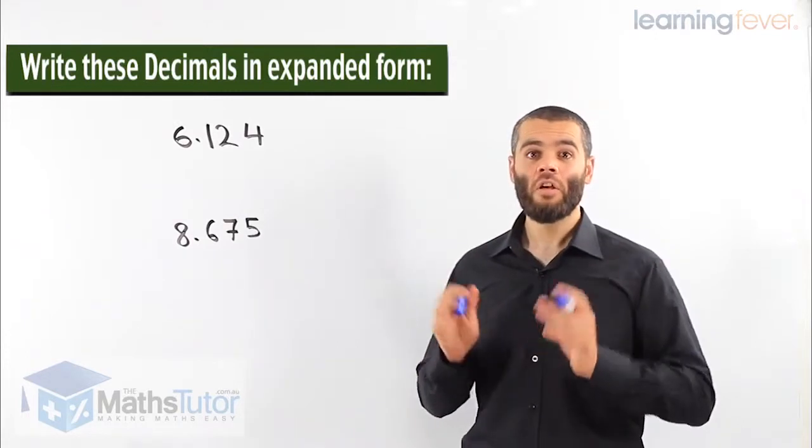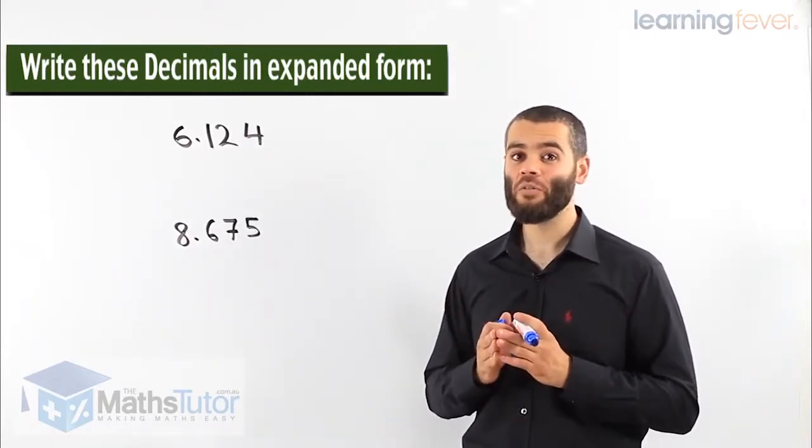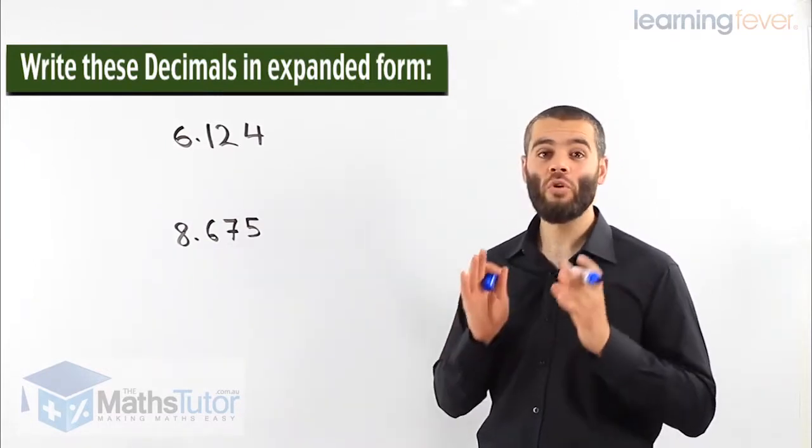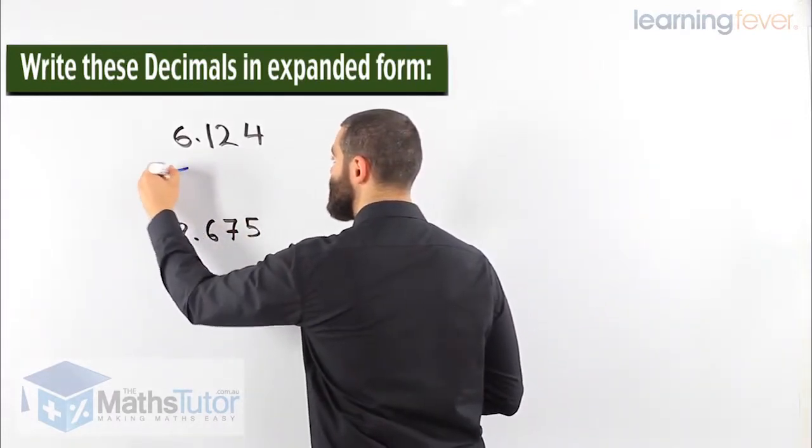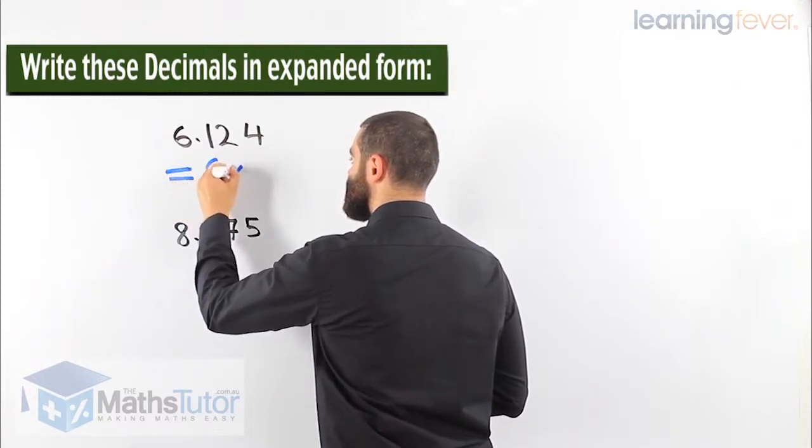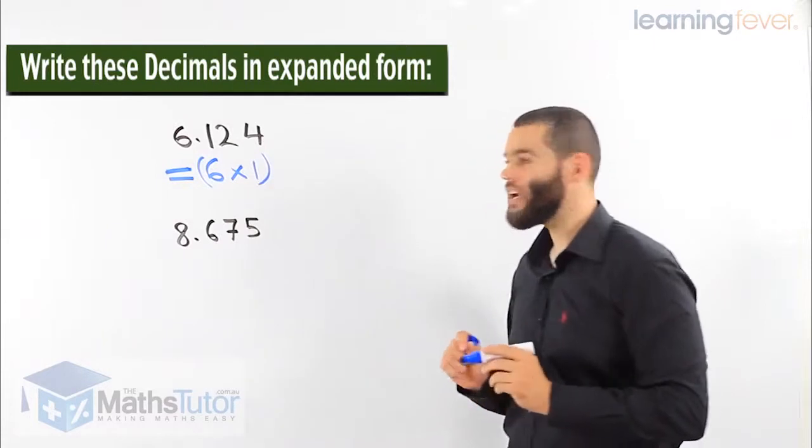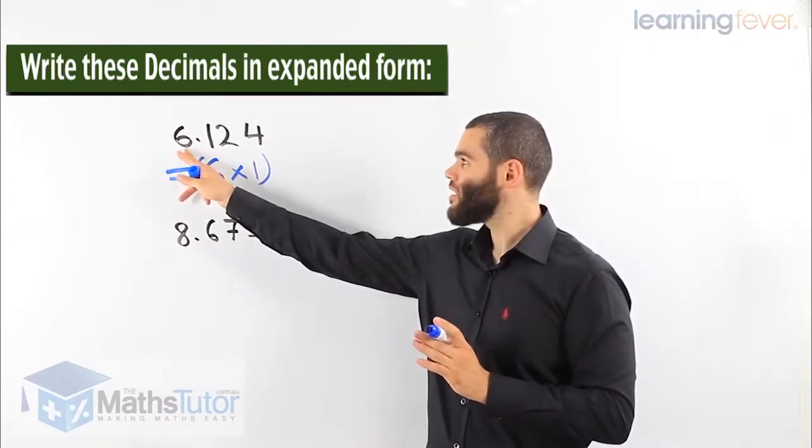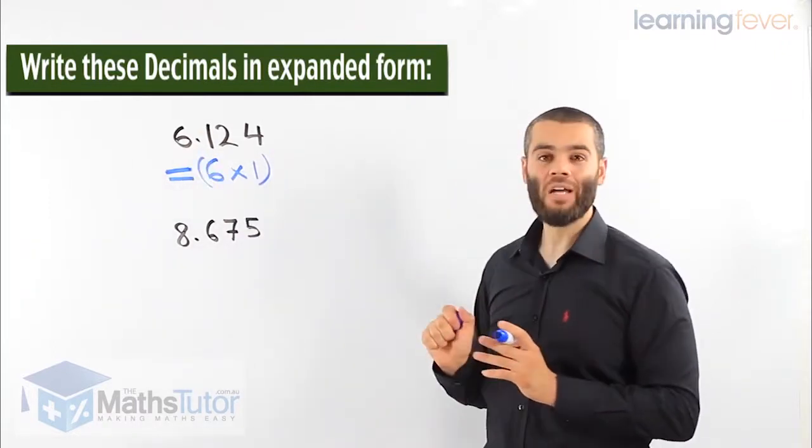The 6, think about it. Which column is it in? Which place value does it hold? The 6 holds the units or the ones column. So to write it down in expanded form, 6 times 1. We now have categorized it and we've said this is in the ones column or the units column.